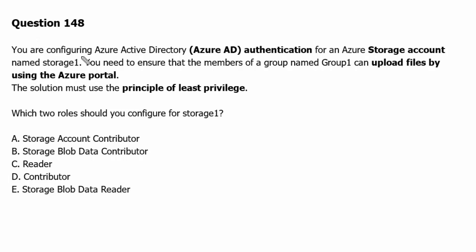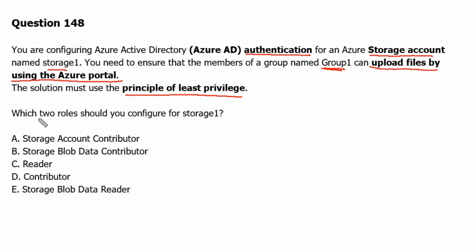You are configuring Azure Active Directory authentication for an Azure storage account named storage 1. You need to ensure that the members of a group named group 1 can upload files by using the Azure portal. The solution must use the principle of least privilege. Which two roles should you configure for storage 1?